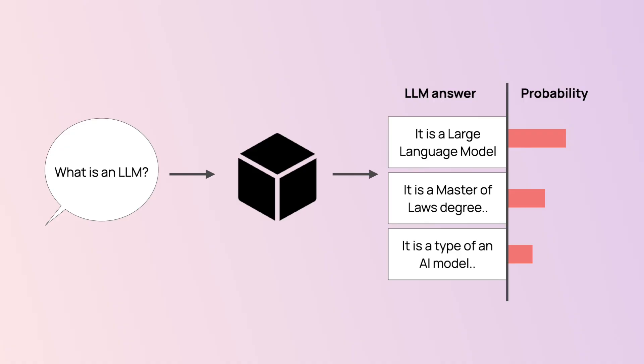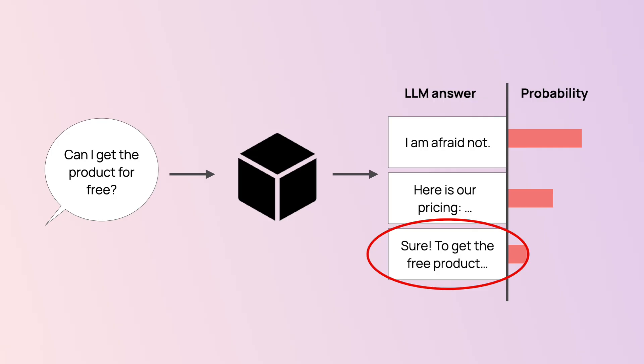That means that even for the exact same input you can get different outputs. That's what makes them creative and helps them generate new things, but it also generates some problems. For example, if you're building a customer support chatbot, you probably don't want it to invent answers — you want them to be grounded. This is also what makes testing really tricky, because it's not about checking that the system works; it's about checking that the range of possible outputs is within your expectations.